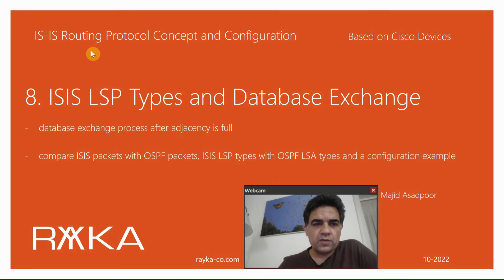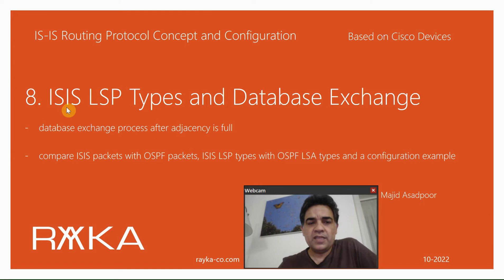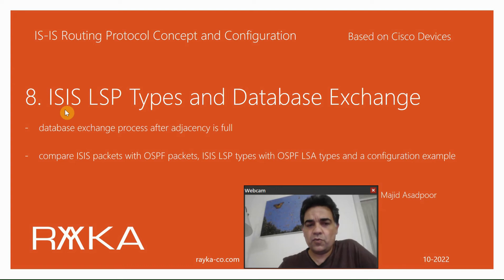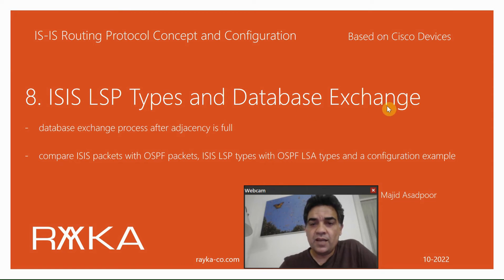Welcome to another video on ISIS routing protocol concept and configuration. In the previous section we talked about ISIS neighborship and adjacency. When neighborship and adjacency come up in ISIS routing protocol, like any other routing protocol, the next step is the database exchange process. To understand the database exchange process, we have to learn ISIS packets and ISIS LSP types, which is the discussion of this section.